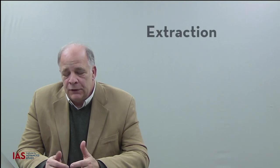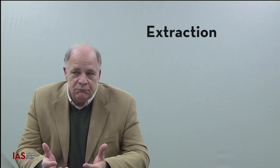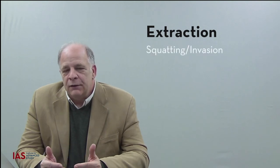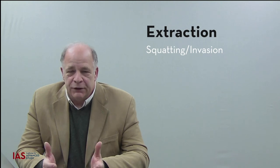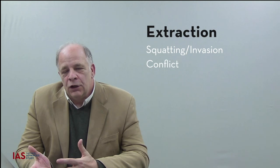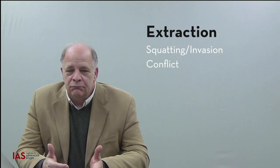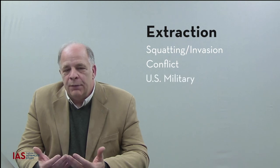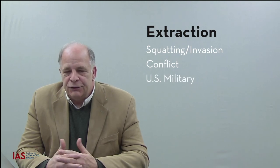Extraction developed its own mechanism for forcing Indigenous land cessions. First, miners like Henry Dodge would squat or invade Indigenous land that was rich in minerals. This would create conflict and they would call in the U.S. military for their protection. Then, the military presence would help engineer a land cession treaty.